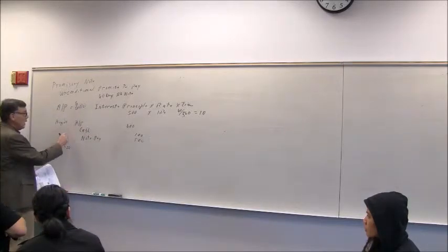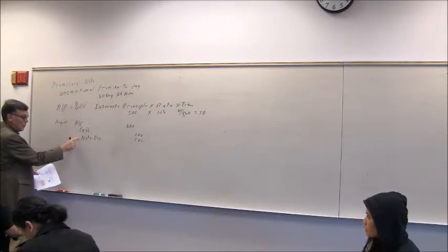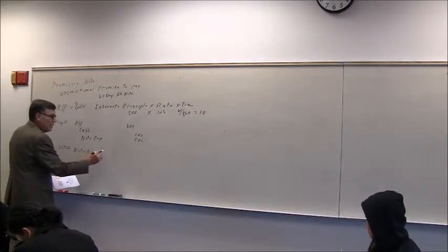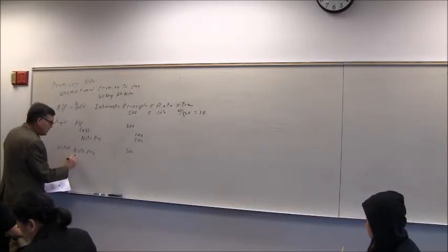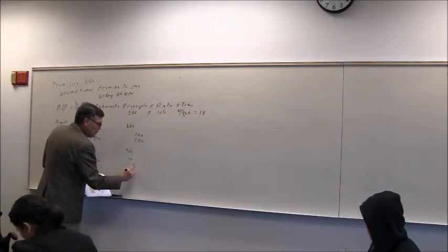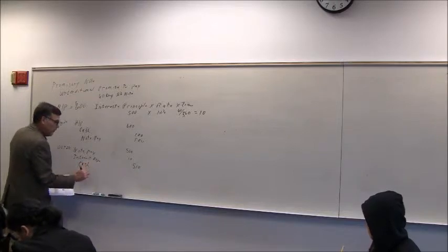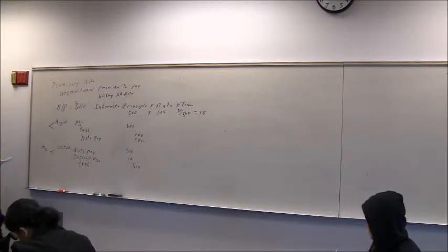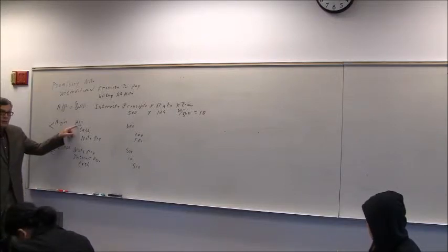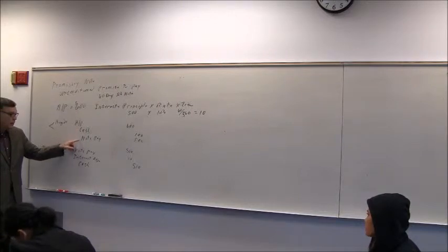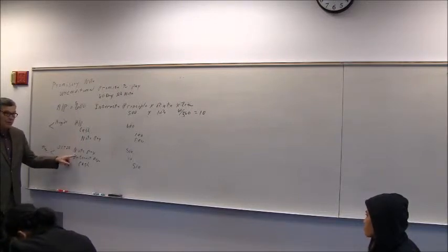Here's where they convert the accounts payable to the note payable. Now here's where they pay it. So when they pay it, the note payable is written off, so you debit the liability. Interest expense of course will also be a debit. It will be a debit of $10 and the total cash spent will be adding the two together, so that's a credit to cash for $510. So here's where they convert it into accounts payable and here's where they pay it. We're the company that can't pay the $600. An accounts payable means we borrowed from our supplier, we converted it into a note payable, and here we're paying it off.